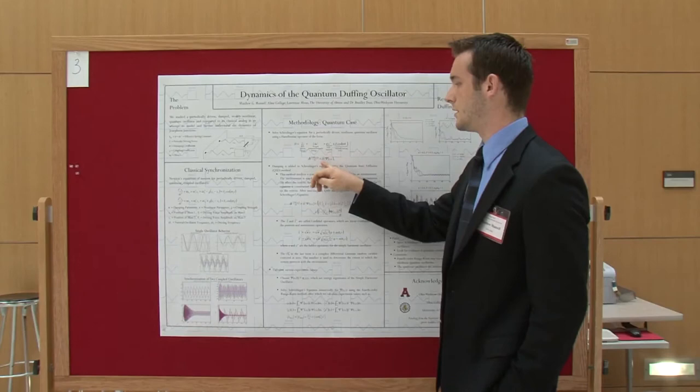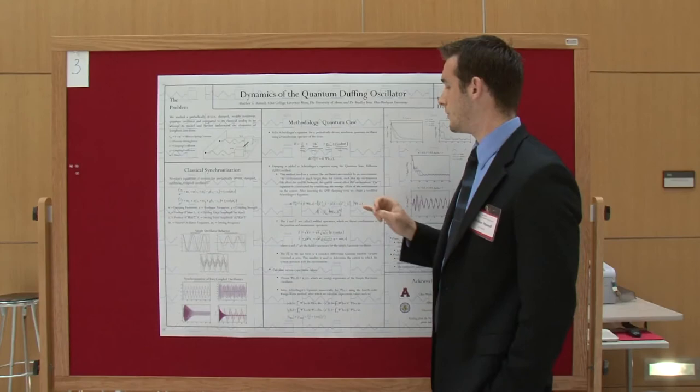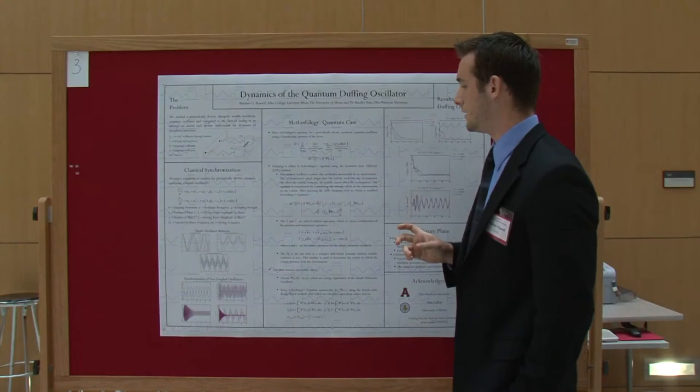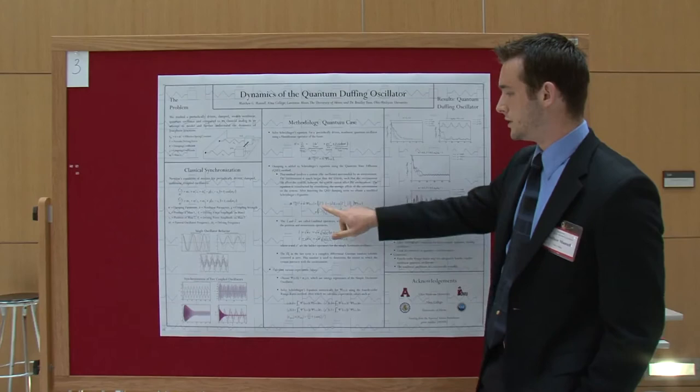We solved Schrodinger's equation and that was simple until we added damping. We added damping using the quantum state diffusion method which is basically a method where the oscillator is a system and it interacts with an environment and the average effect of the environment is what's put into the equation right here.